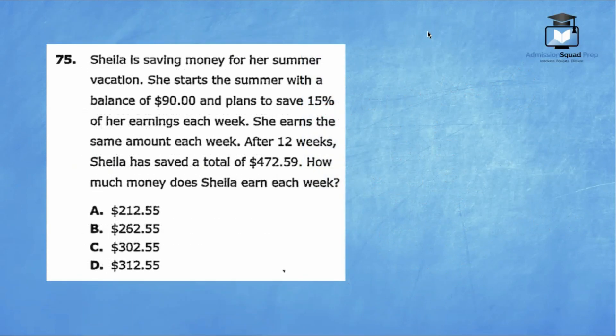Question 75. Sheila is saving money for her summer vacation. She starts the summer with a balance of $90 and plans to save 15% of her earnings each week. She earns the same amount each week. After 12 weeks, Sheila has saved a total of $472.59. She did pretty good. How much money did Sheila earn each week? Let's set up our equation. 90 plus 15% times E, which is our earnings. And then we're going to multiply 0.15 times the weekly earnings by 12. That total is equal to $472.59.